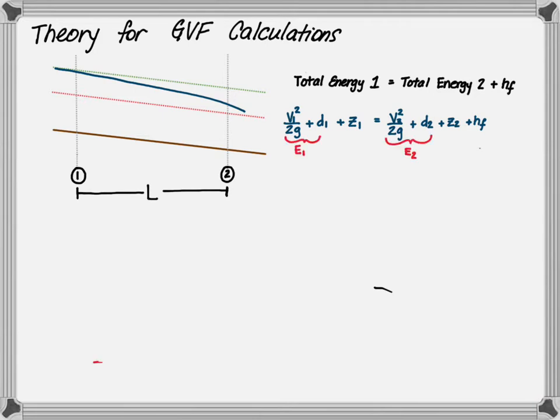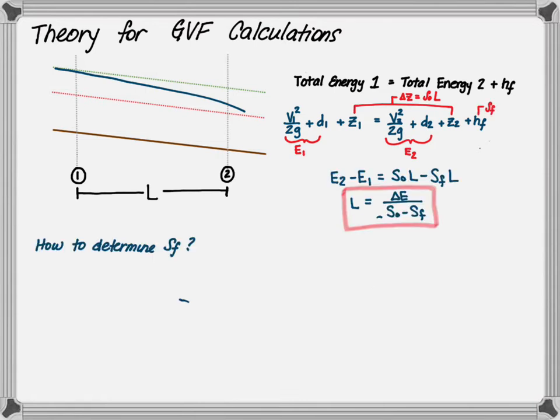Remember that velocity head plus water depth is your specific energy, so we can identify E1 and E2. Z1 and Z2 give us delta Z. You can find delta Z by taking the slope of the channel bed and multiplying it by the length. Your friction head is length times friction slope.